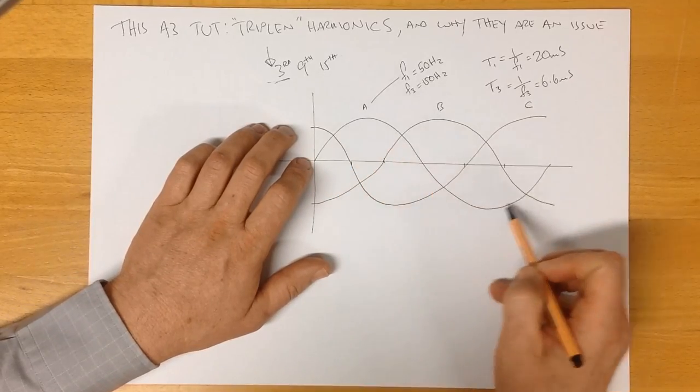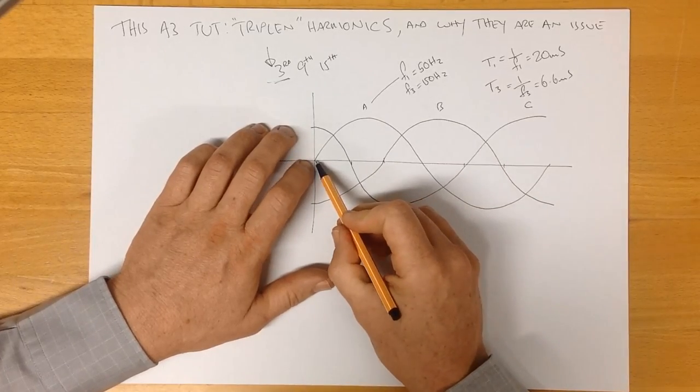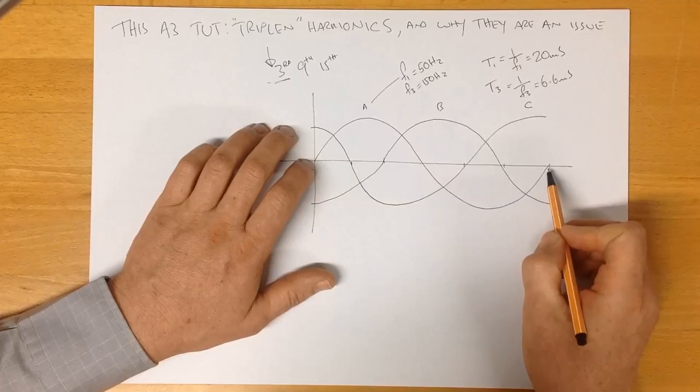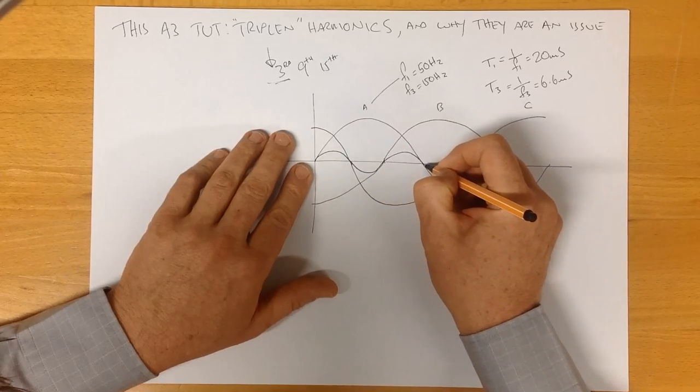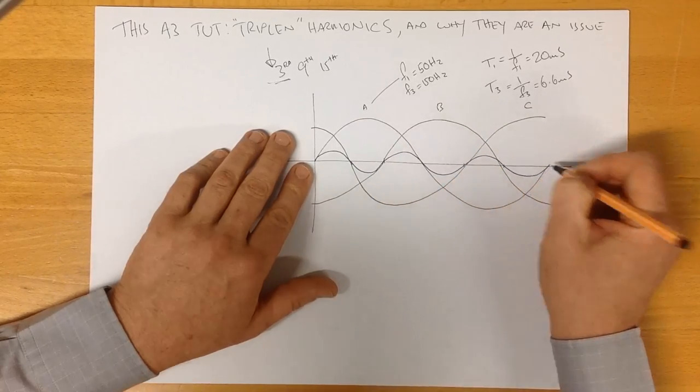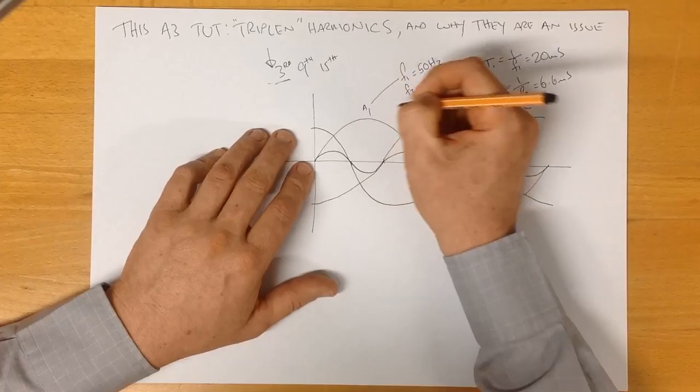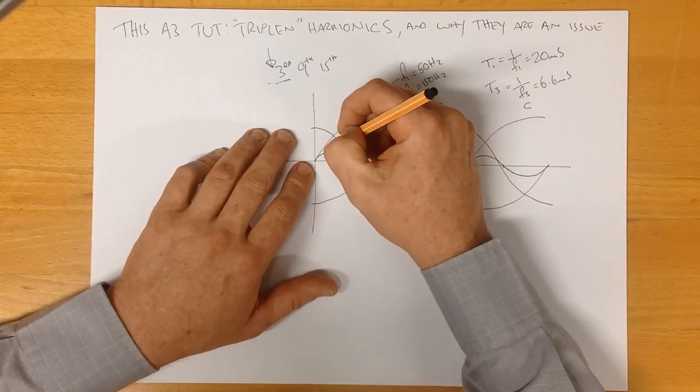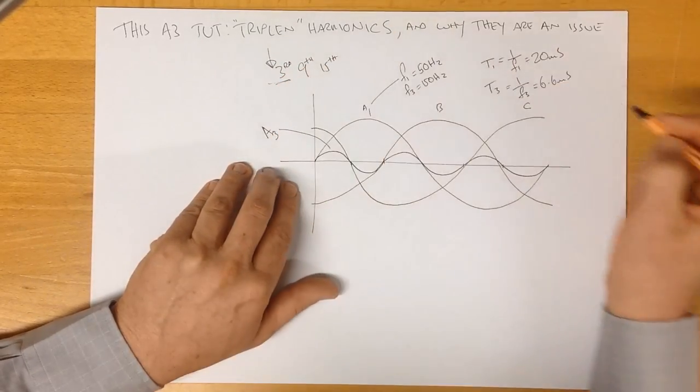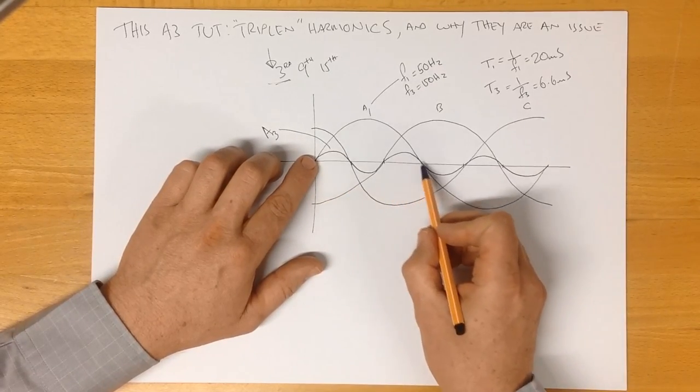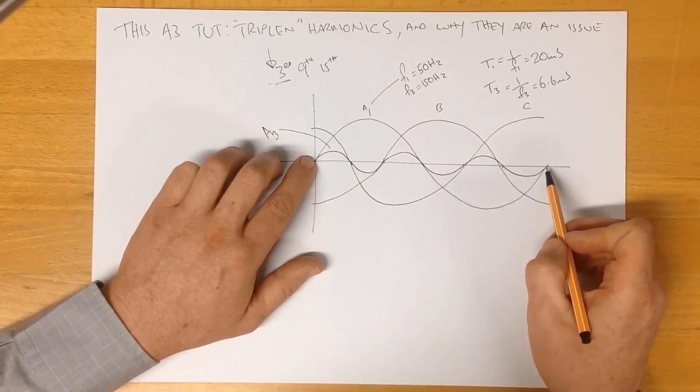If we look at phase A here we can draw our third harmonic in here quite simply. In order to do that we need to get three cycles in the space of one. So here is the fundamental of phase 1 and this waveform here is the third harmonic. There are three cycles, one, two, three within the cycle of our fundamental.